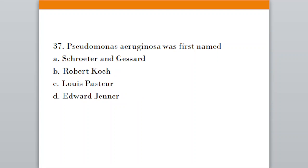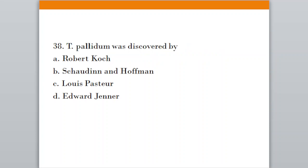Question number thirty-seven: Pseudomonas aeruginosa was named by. Option A, Schroeter and Gessard; Option B, Robert Koch; Option C, Louis Pasteur; Option D, Edward Jenner. The correct answer is option A, Schroeter and Gessard. Question thirty-eight: Treponema pallidum was discovered by. Option A, Robert Koch; Option B, Schaudinn and Hoffmann; Option C, Louis Pasteur; Option D, Edward Jenner. The correct answer is option B, Schaudinn and Hoffmann.